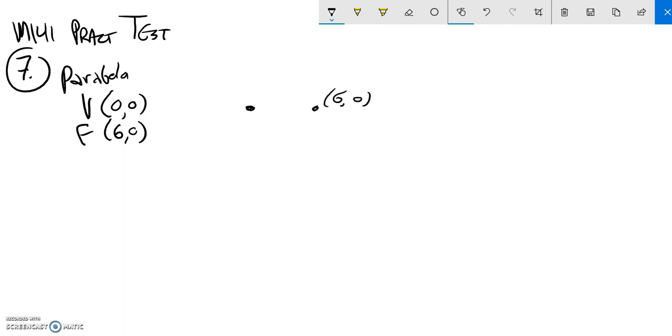So that means I have a parabola that wraps around the focus from the vertex. Great! So that's actually nice because now I know my p distance here is six.